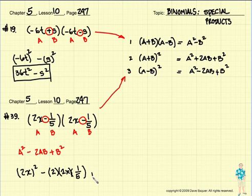All we're doing is using our formula. Plus, and then take that B, which is 1 fifth, and square it as well.